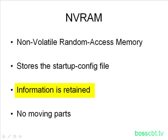That's important because if every time you lost power or reloaded the switch you lost your configuration file, you'd have all that work to do over again and would cause a network outage. So the fact that NVRAM information is retained is very important. It's also worth noting that there are no moving parts in this type of memory — it's random access memory — which means there are fewer things to break, contributing to the longevity of the switch.